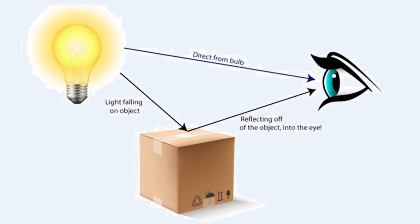When light waves hit an object, some of the light waves enter the object and get converted into heat energy. Some of the light waves bounce off the object, still traveling in straight lines. We can see a book or a car because light from the sun or a bulb is reflected from the book into our eyes.